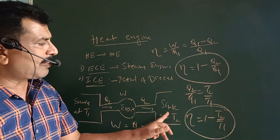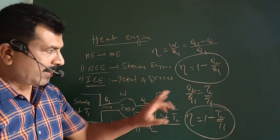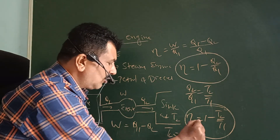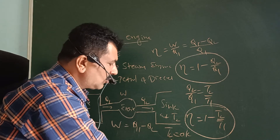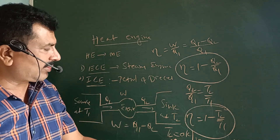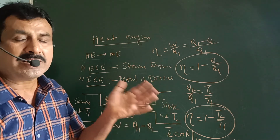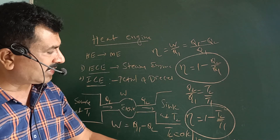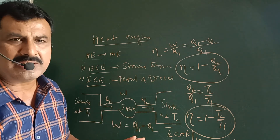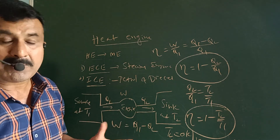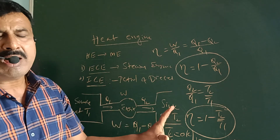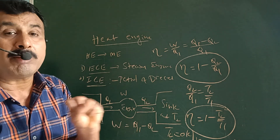T1 is the temperature of the source and T2 is the temperature of the sink. If the temperature of the source increases and the temperature of the sink decreases, efficiency of the engine increases. If T2 equals 0 Kelvin, then Q2 equals 0 and efficiency equals 1, which means 100% efficiency. But a temperature of 0 Kelvin, that is minus 273 degrees Celsius, is practically impossible to maintain. That's why the efficiency of the engine can never be 100%.